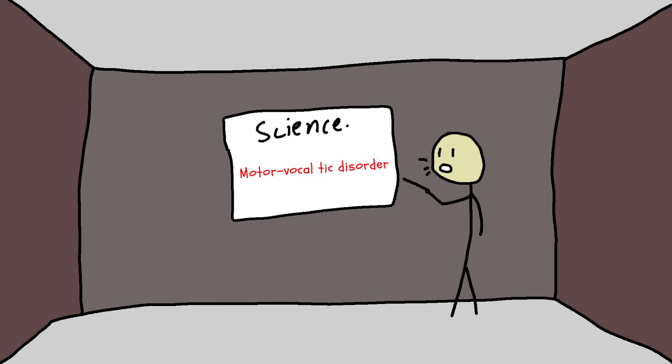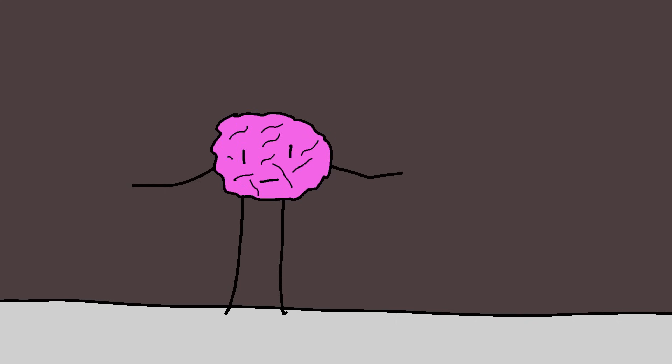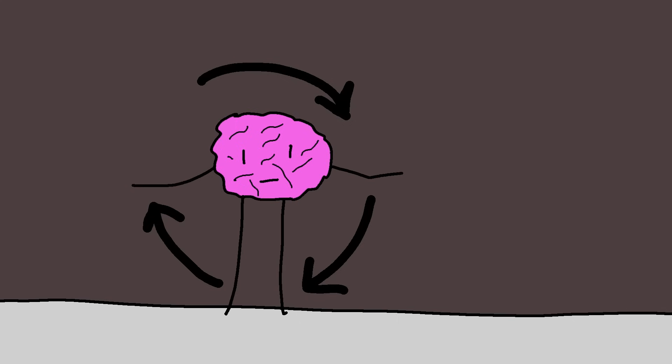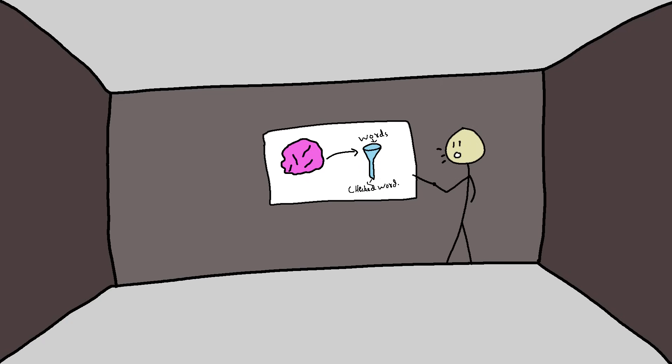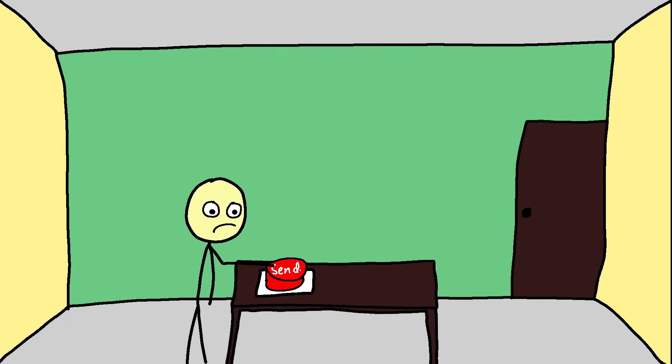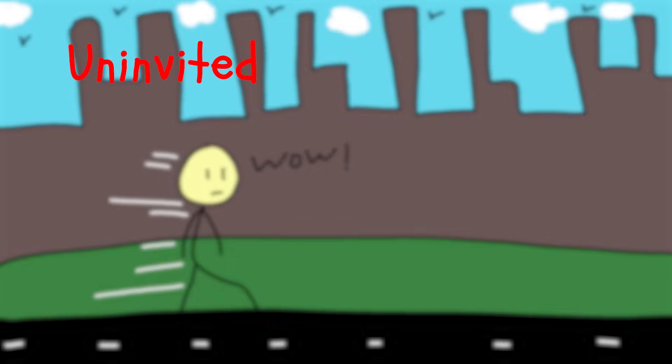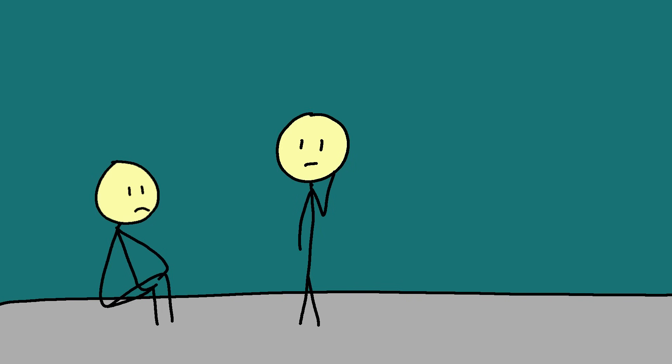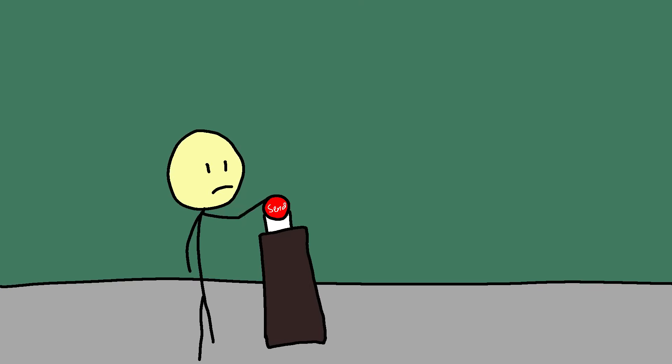Science calls it a motor vocal tick disorder, a misfire in the basal ganglia. Basically, the part of your brain that says maybe don't say that. It's the brain's habit and inhibition center. And when it glitches, words skip the filter. Normally, your brain has a filter. It plans what to say, checks if it's appropriate, and then hits send. In Tourette's, that send button gets jammed. Words and movements fire off like reflexes. Uninvited. Unfiltered. Unstoppable. It's not emotional. It's not intentional. It's not even voluntary. Just a glitch in the brain's filter system, one that keeps hitting send.